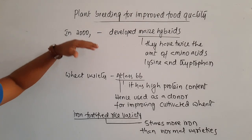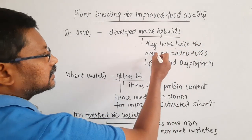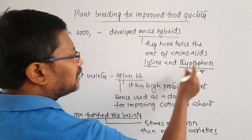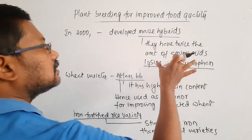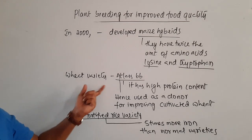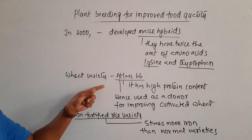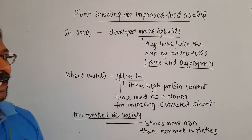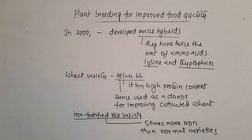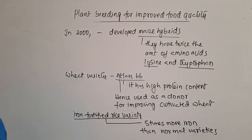In the year 2000, maize hybrids were developed that have twice the amount of amino acids like lysine and tryptophan compared with normal hybrid varieties. A wheat variety named Atlas 66 has a very high protein content and is used as a donor for improving cultivated wheat. It also became possible to develop iron-fortified rice, which may have five times more iron compared with normal varieties.